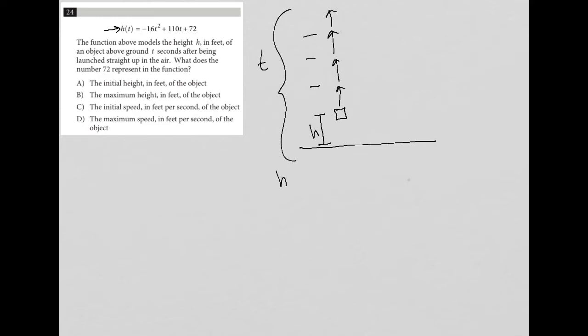I like to write down the equation if there's one provided, just so I can get a sense for it myself. Now, the question asks: what does the number 72 represent in the function?